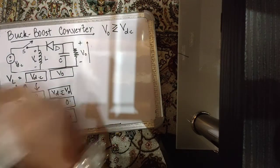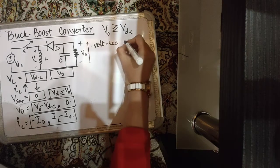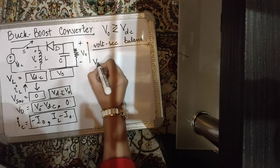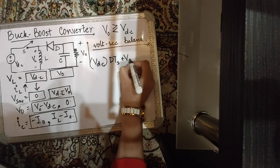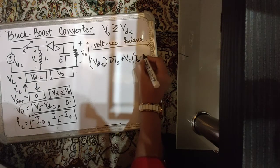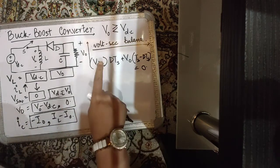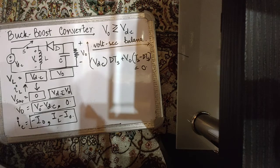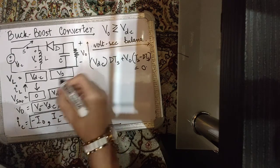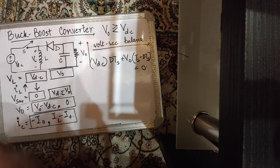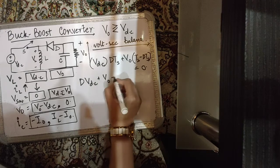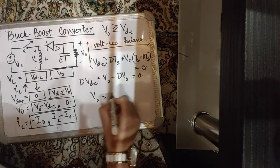Applying volt-second balance — which ensures the inductor releases as much energy as it stored, meaning no net change in inductor current over a switching cycle: VDC · DTS + V0 · (1 − D)TS = 0. Solving this gives V0 = −D·VDC / (1 − D). The minus sign indicates the output voltage develops in the reverse direction relative to our chosen convention.